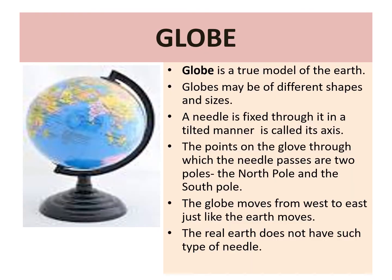What is a globe? A globe is a true model of the Earth — a miniature form of the Earth. Globes are of different shapes, sizes, and types. Some are very big and cannot be carried easily; others are small pocket globes. Some are globe-like balloons which can be inflated and are handy and easy to carry.